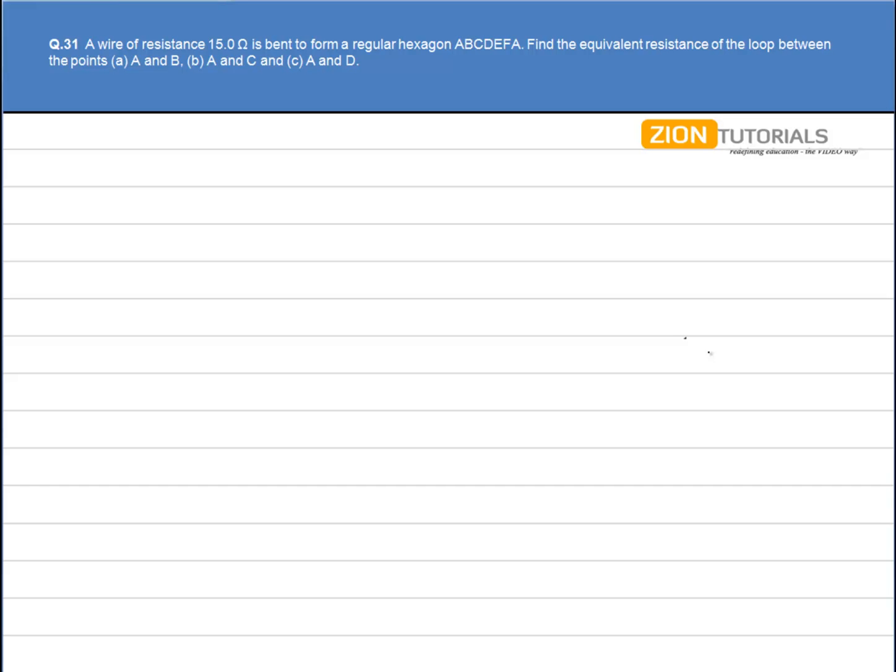A wire of resistance 15 ohm is bent into form of a hexagon. We have to calculate the equivalent resistance in three different cases. So let's say that this is my hexagon first of all.